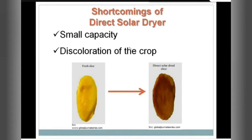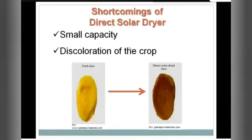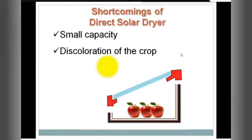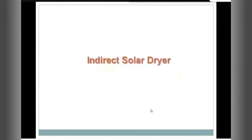We humans have a tendency that wherever we see shortcomings, we try to evolve new versions — just as we evolve new versions of WhatsApp and iPhone. Similarly, we have a new version of the direct solar dryer. The problem was that in the direct solar dryer, sun rays are in direct contact with the fruit. So we had to develop something without this direct contact — and for this we have the indirect solar dryer, which needs a messenger: a solar collector.